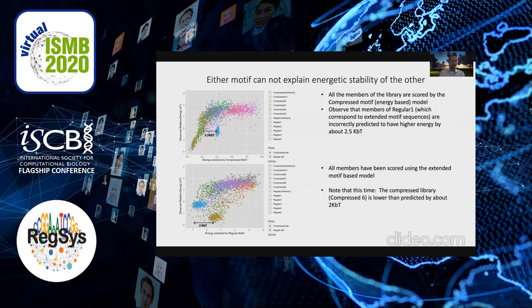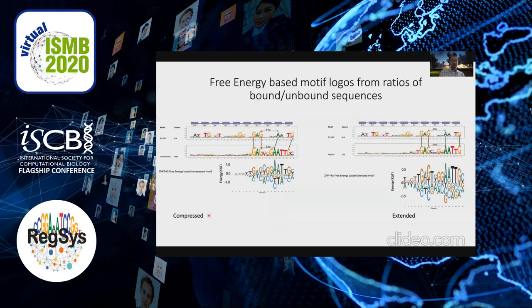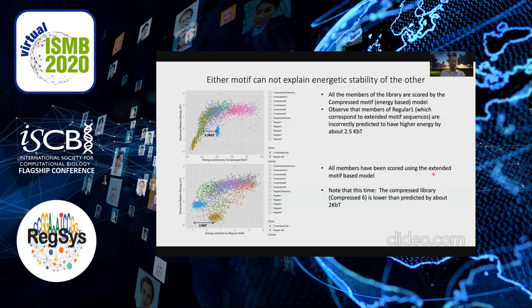Similarly, if you use the extended motif model to score all the sequences, you're not able to explain the energetic stability of the set of sequences which make up the compressed motif model. This means that ZNF140 actually has two distinct binding modes, and you need both energy-based models to fairly explain the stability of all the sequences.